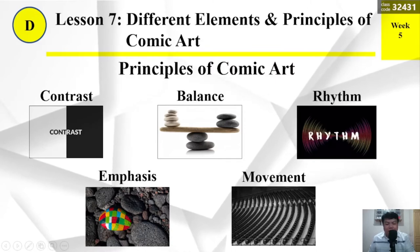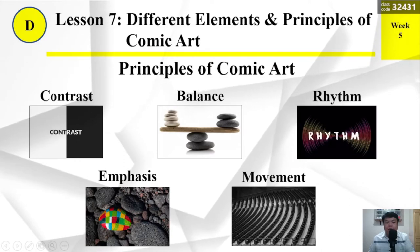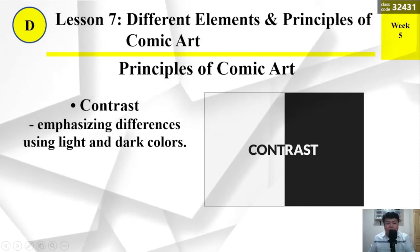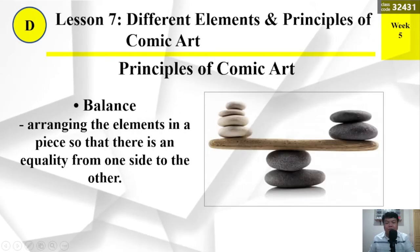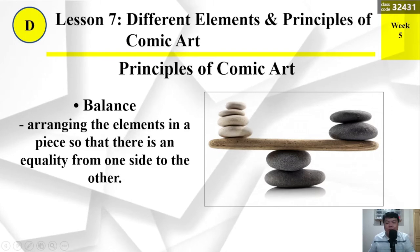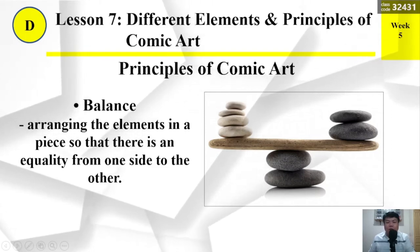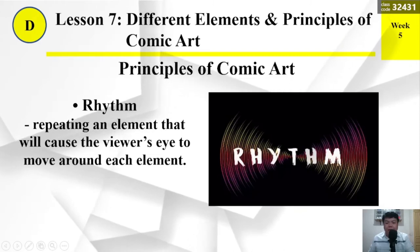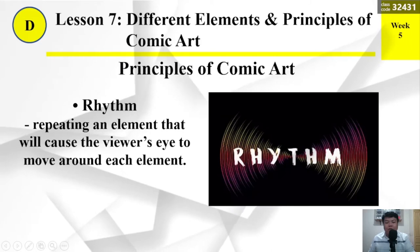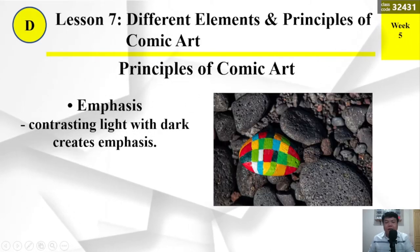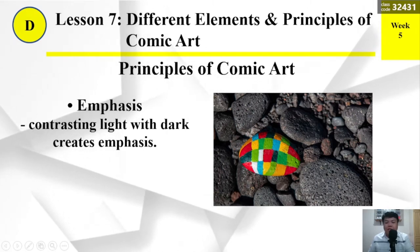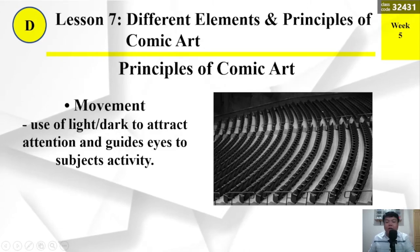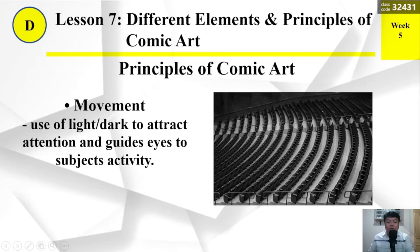Principles of Comic Art: we have contrast, balance, rhythm, emphasis, and movement. Contrast — emphasizing differences using light and dark colors. Balance — arranging the elements in a piece so that there is an equality from one side to the other. Rhythm — repeating an element that will cause the viewer's eye to move around each element. Emphasis — contrasting light with dark creates emphasis. Movement — use of light or dark to attract attention and guide the eye to the subject's activity.